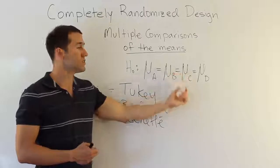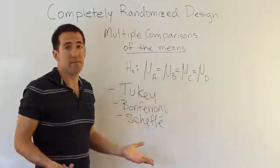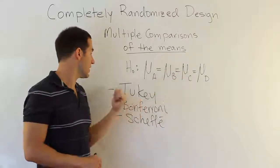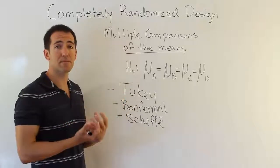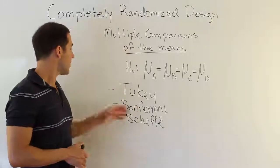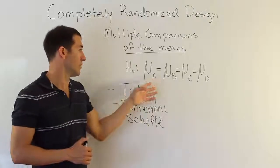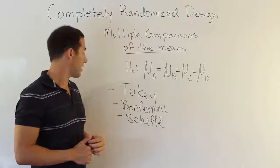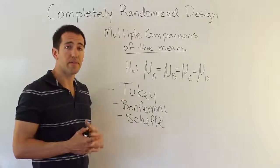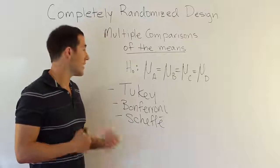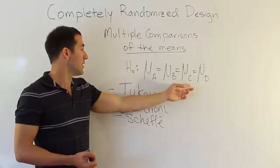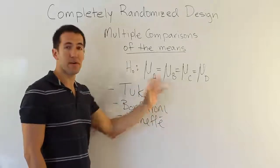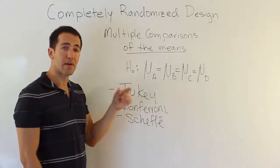If you have a balanced design, use Tukey because it gives the best results. After that, we have Bonferroni. Bonferroni does not require a balanced design — you can have different sample sizes across treatments. So if Tukey is off the table, Bonferroni is available and gives the next best intervals, though a little wider than Tukey's. The only restriction is you still cannot do complicated comparisons — you can't do things like C plus D is bigger than B. You can only make simple pairwise comparisons.